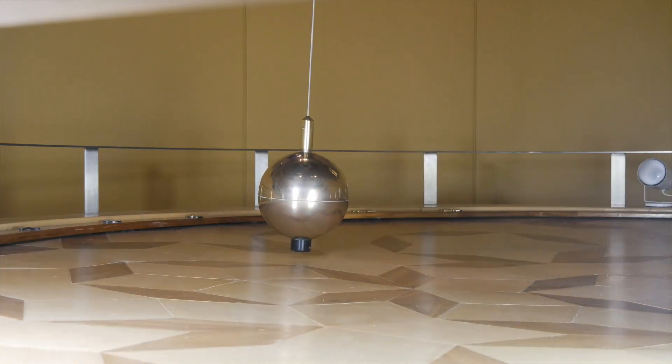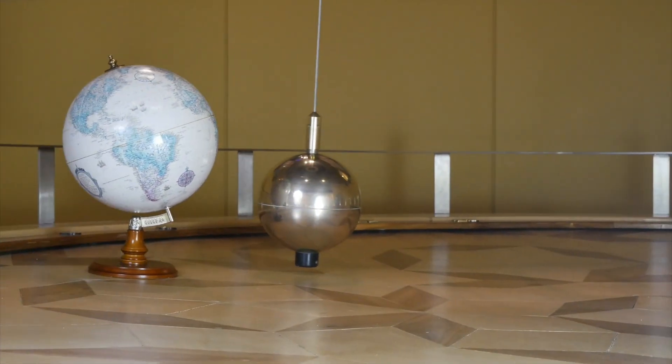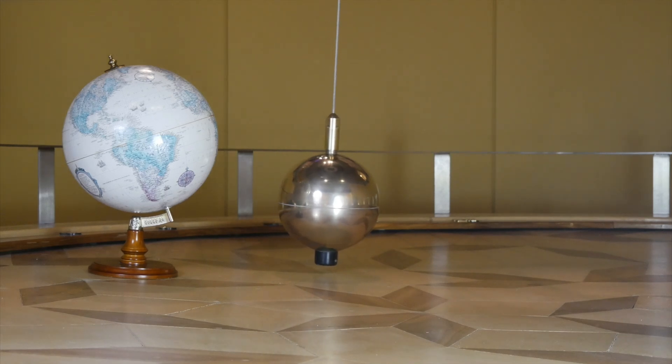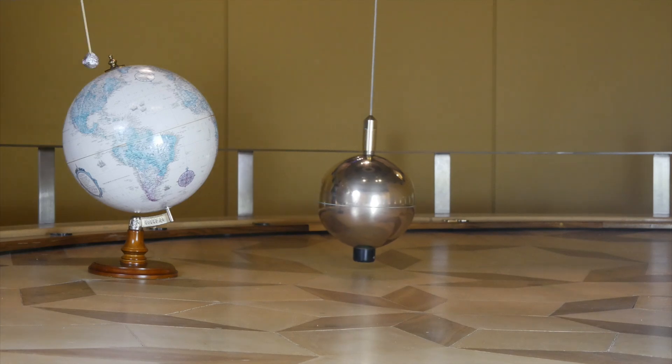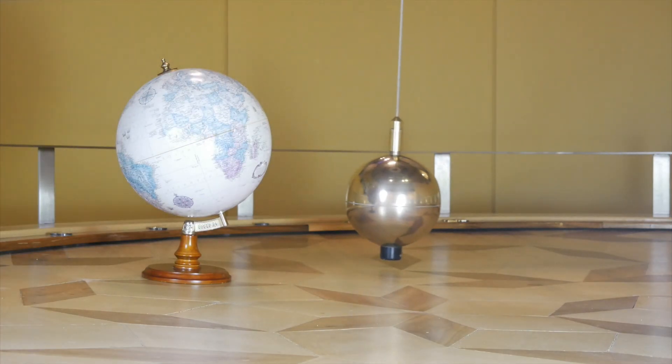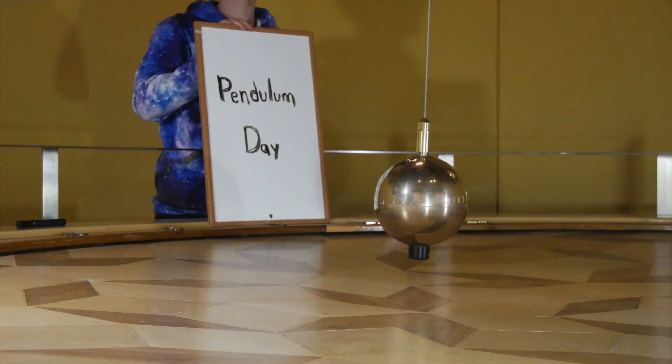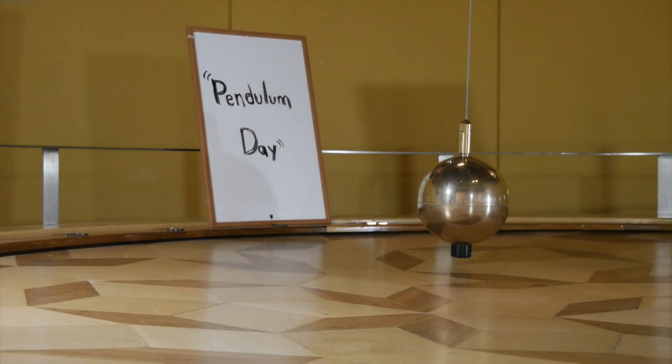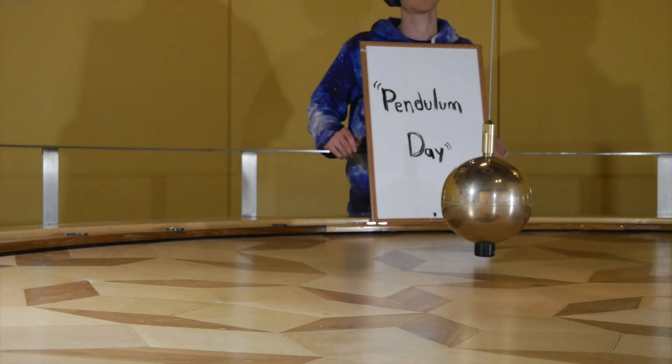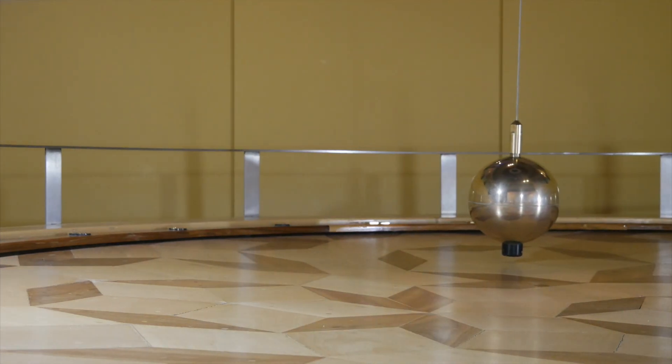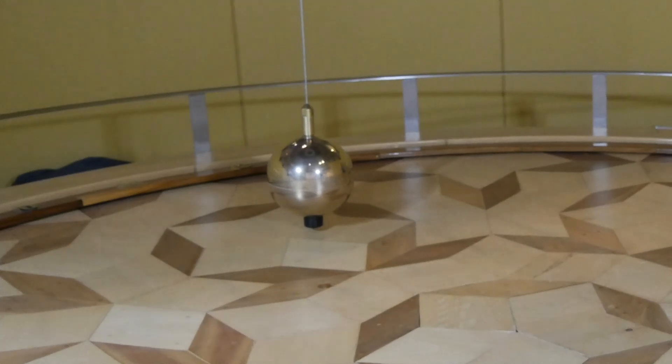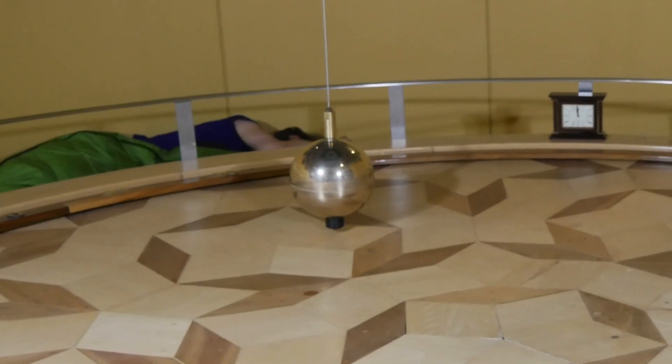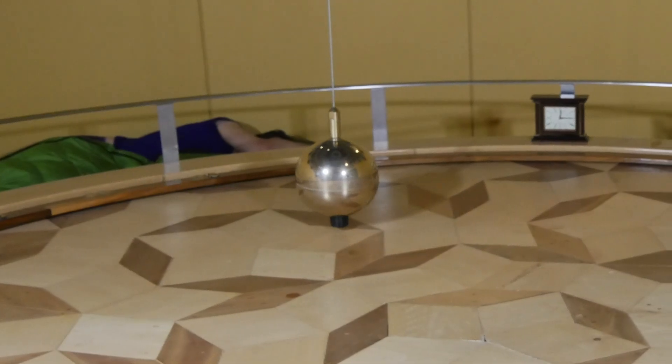But that isn't always the case, because at the poles, the relative rotation between a pendulum and the Earth's axis is at its maximum. So the closer you move a pendulum towards the equator, the longer it takes for a so-called pendulum day to take place. That's the amount of time it takes for a Foucault pendulum to move around the room, as it were. Here at the University of Puget Sound, a pendulum day is about 32.3 hours long.